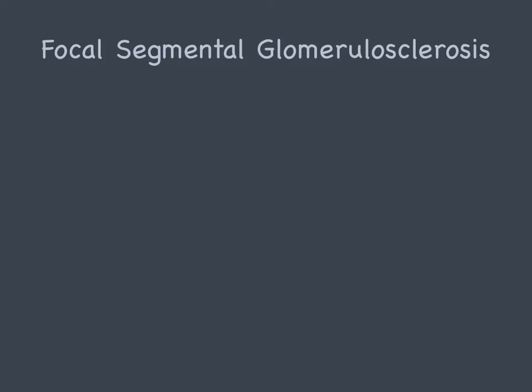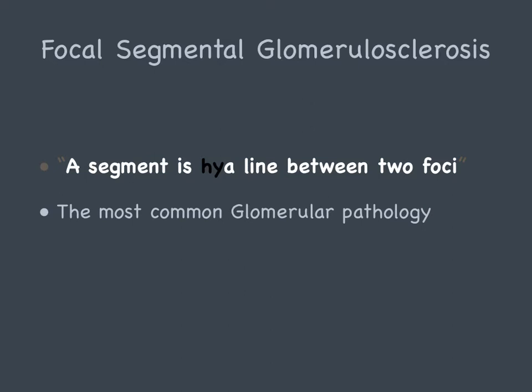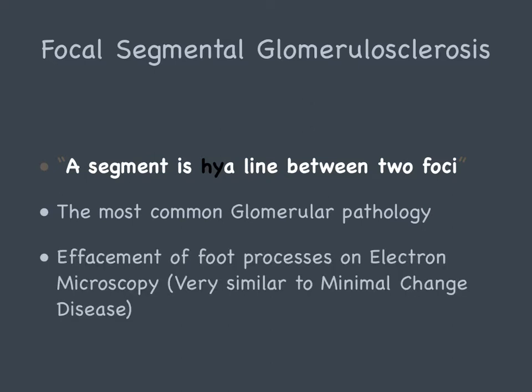Focal segmental glomerulosclerosis (FSGS) is the most common glomerular pathology. The way I remember the histopathology is that a segment is a line between two foci — so in FSGS you have hyalinization of segments of the glomerulus. It also has an electron microscopy finding that looks like minimal change disease because of effacement of the podocyte foot processes.